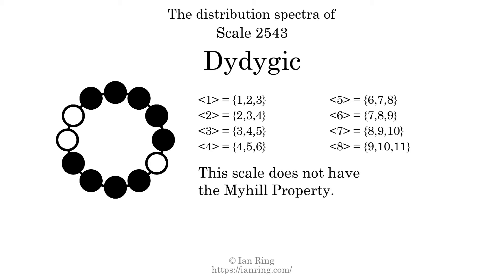If every spectrum has exactly 2 specific intervals, we call that the Myhill property. This scale does not have the Myhill property. Since the generic interval ranges overlap, this scale is an improper scale.